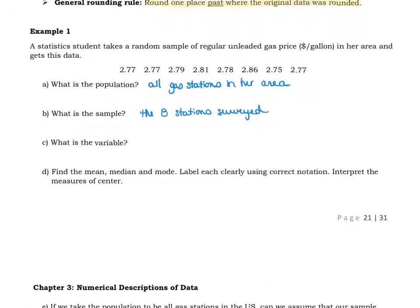What is the variable? So what did she find out about each one of those gas stations? She was doing the price per gallon—that's what she was trying to find out.